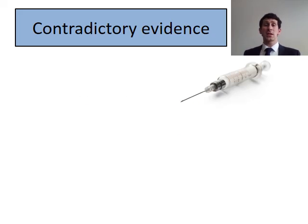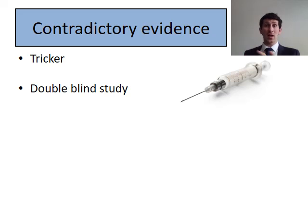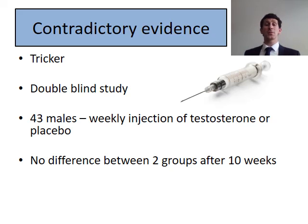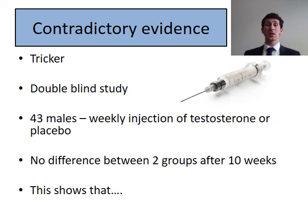There is also contradictory evidence: a double-blind study conducted by Tricker. Neither the participants nor the researchers knew which treatment was being received. 43 males had weekly injections of either testosterone or a placebo, and what they found was no difference between the two groups over 10 weeks across a range of characteristics including aggression levels. This suggests that biology and hormones may not have a major impact after prenatal development — potentially, prenatal development is where most gender development starts to occur, and any hormonal influences after that may not have a major impact.